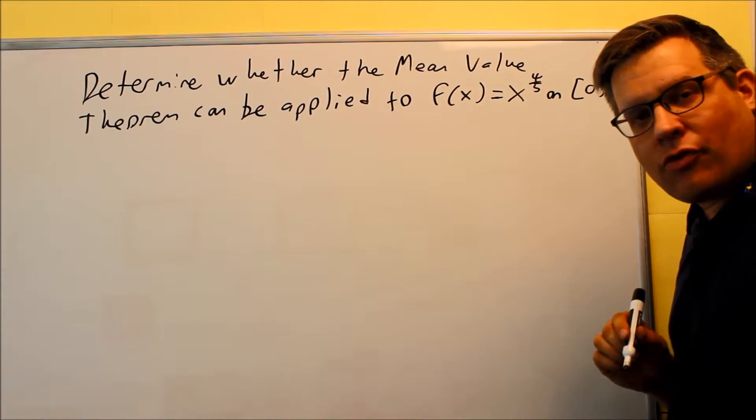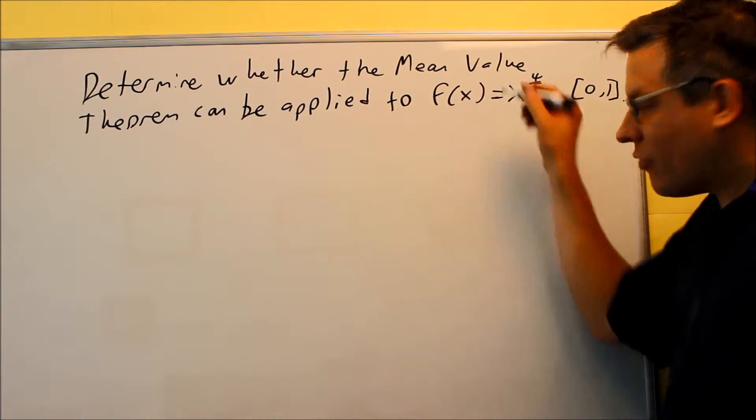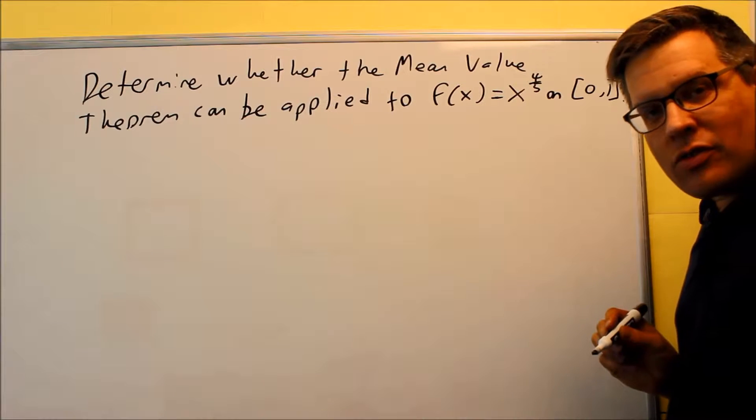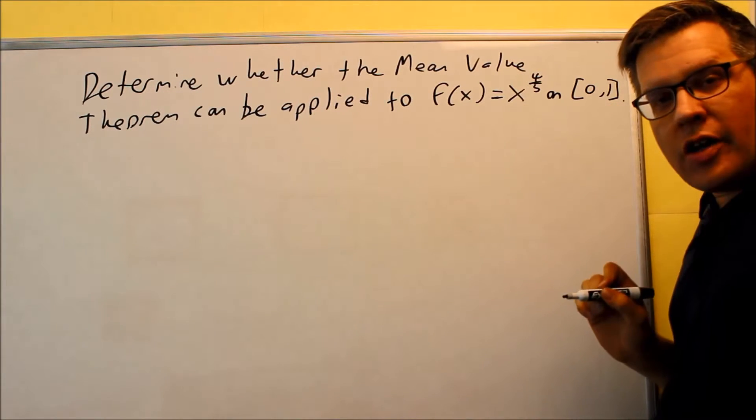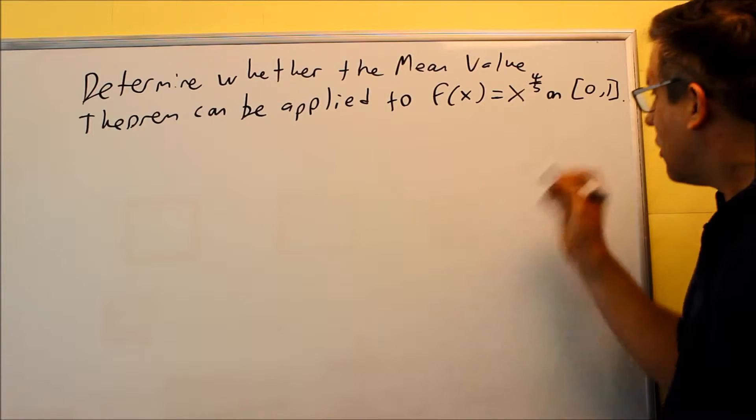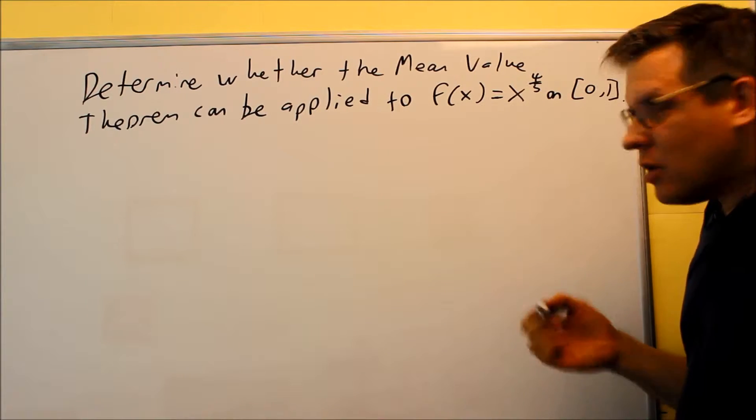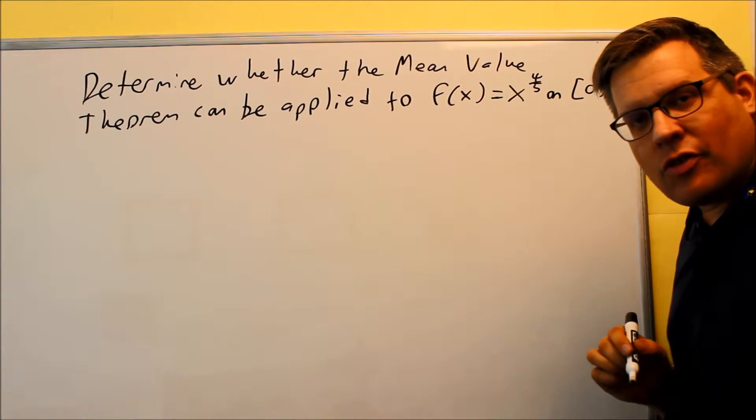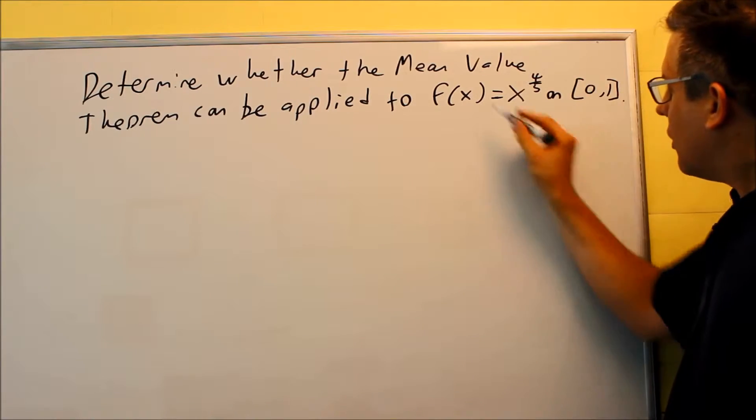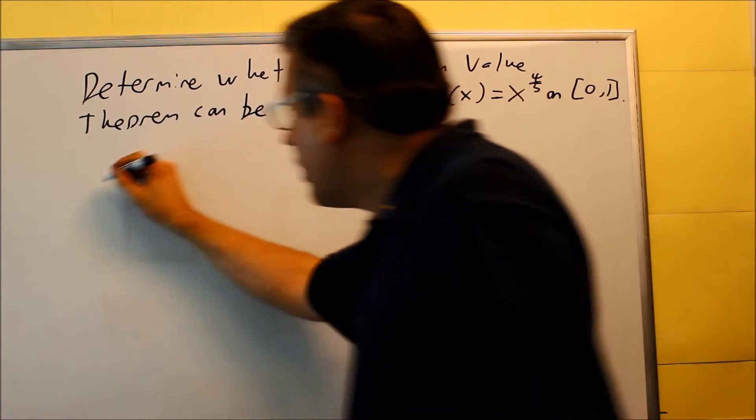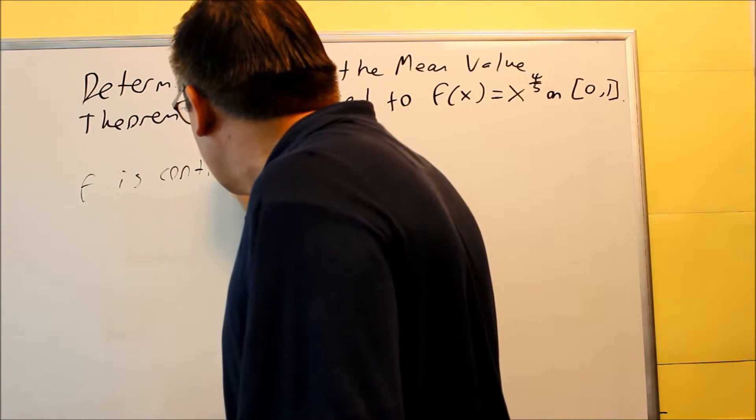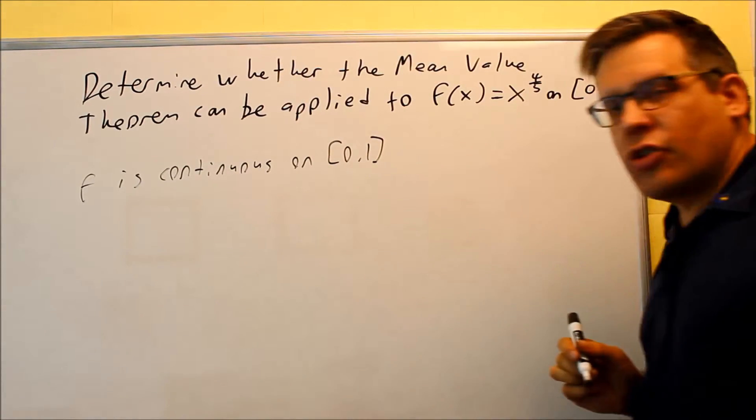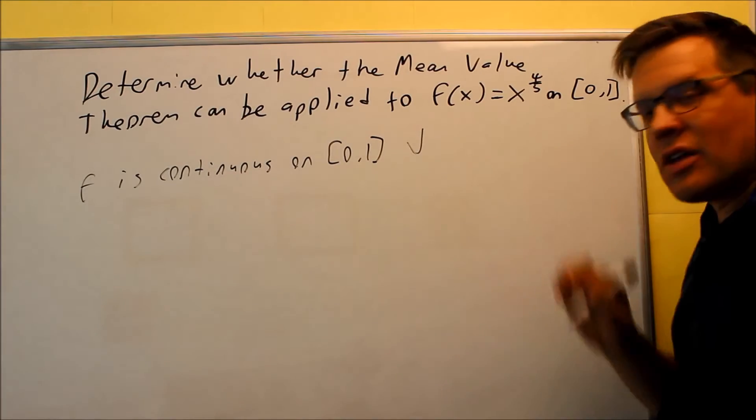Now the first thing you have to look for, condition that has to be met, is f(x) has to be continuous on the closed interval. I have x raised to the 4/5 and if I put 0 in there, 0 raised to anything is 0. If I put 1 in there, 1 raised to anything is 1. But anything in between 0 and 1, I'm not going to be taking the square root of a negative number or have a division by 0. So because of that, we know for sure that this is going to be continuous on the closed interval. So I know that f is continuous on closed interval from 0 to 1. So that's the first condition that's satisfied.